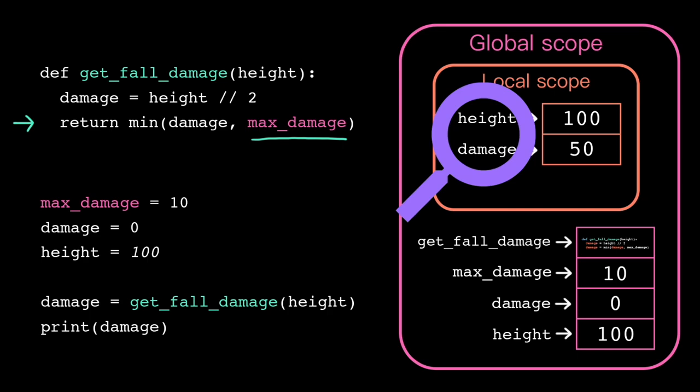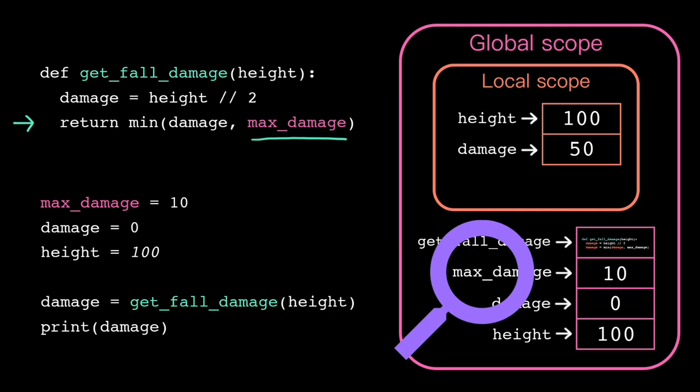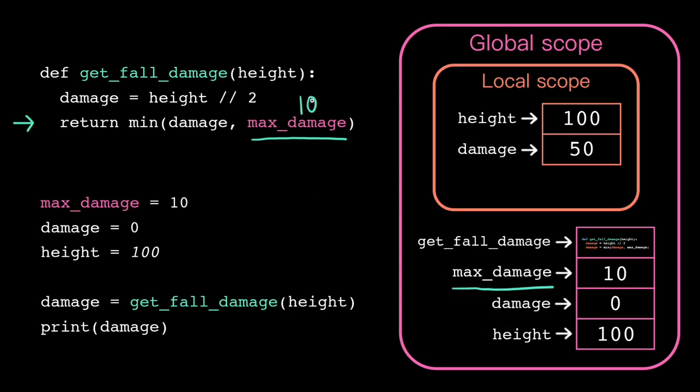Here, it searches the local stack frame first for the name max damage. If it doesn't find it in memory there, it moves its search to the next closest enclosing scope. So now it'll try to look up max damage in global scope. And once it finds it, it uses that value.